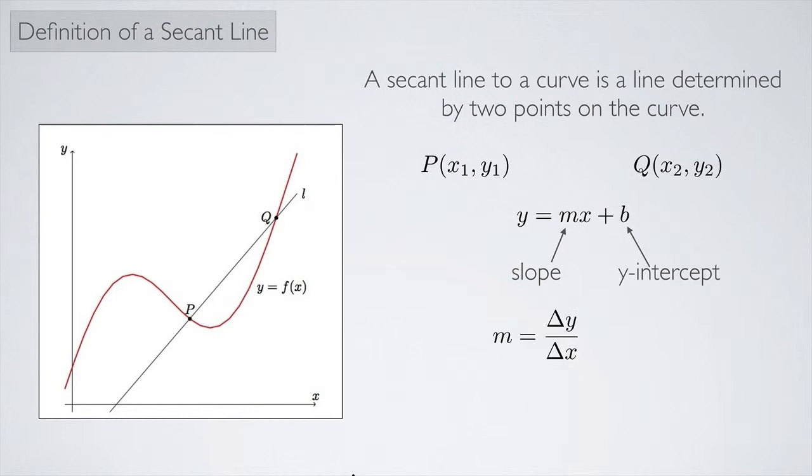To get the slope you can do the change in y over change in x and that would just be y2 minus y1 divided by x2 minus x1. And then to get the y-intercept you can solve it using y minus mx. We know the slope—you can get that using this formula—and then for x and y you can plug in either of the two points. Either one will work and that will allow you to solve for b.